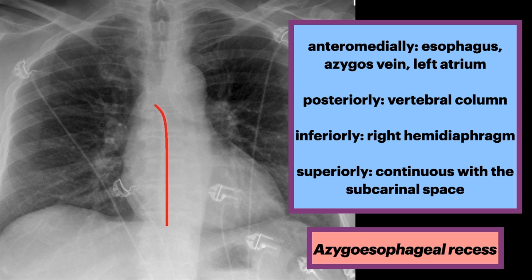On frontal chest radiograph, the recess is seen as a vertically oriented interface between the right lower lobe and the adjacent mediastinum — the medial limit of this recess. Superiorly, the interface is seen as a smooth arc with convexity to the left. Disappearance or distortion of part of the interface suggests disease. On CT, the recess merits particular attention because small lesions located in the recess will often be invisible on chest radiographs.